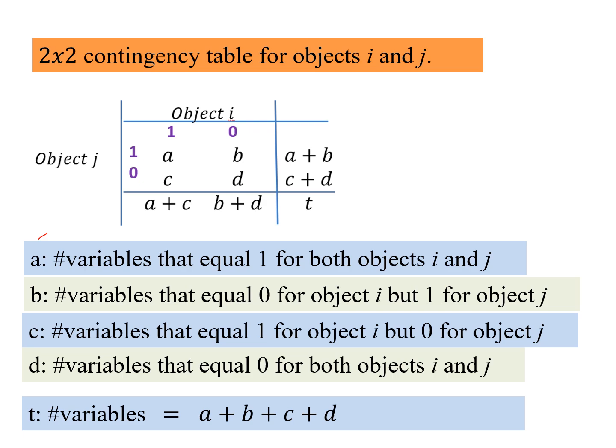So how do we make this contingency table? We have two objects i and j, and the possible states for a binary variable are 1, 0. These are for object i and these for object j.